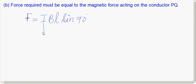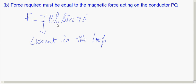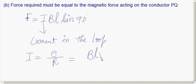Here I is the current in the loop, B is the magnetic field, and L is the length of the conductor. Current I = E/R (voltage divided by resistance). Since E = BLV, we have I = BLV/R.